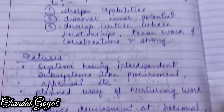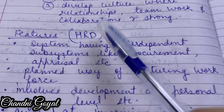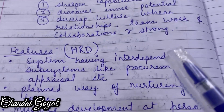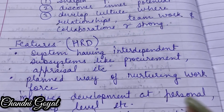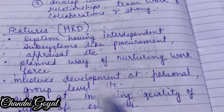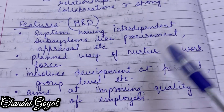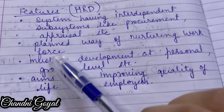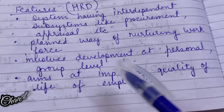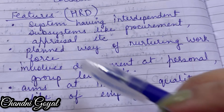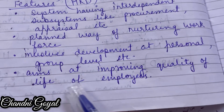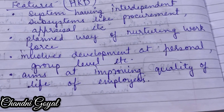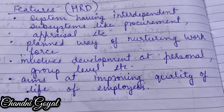HRD mein aapne inner potential ko dhoonj sake, ek aisa culture bana sake jahan pe teamwork hai, relationship strong hai. HRD ke features: HRD ek aisa system hai jiske interdependent subsystems hain — jaise procurement hai, appraisal hai — un sabke andar logo ki development hoti hai. Planned way of nurturing workforce — workforce ko plan achhe tarike se nurture karna. HRD involves development at personal and group level. Aims at improving quality of life of employees.